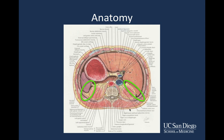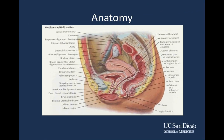Looking at a sagittal slice through a female pelvis, this demonstrates another of the most dependent areas: the recto-uterine pouch, sometimes called the pouch of Douglas. You can see here that this area is where fluid will also preferentially collect in the female pelvis.